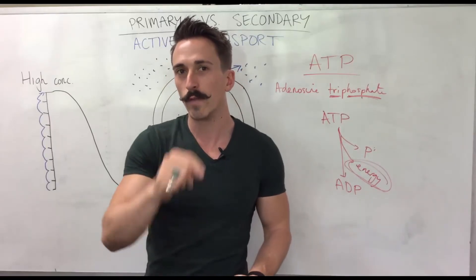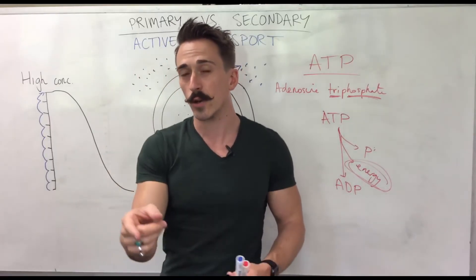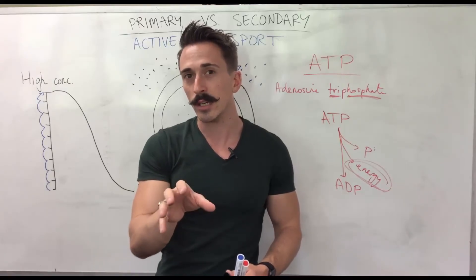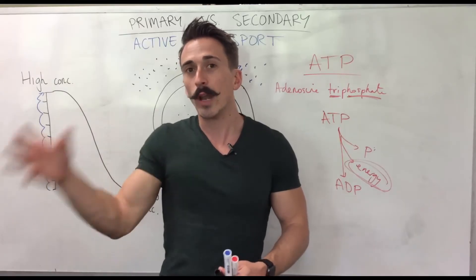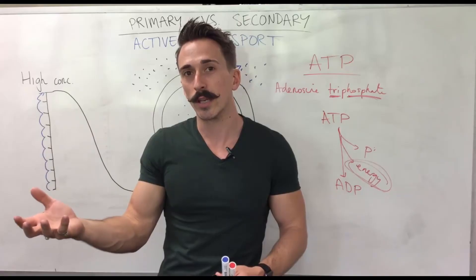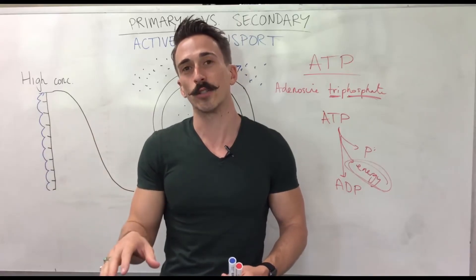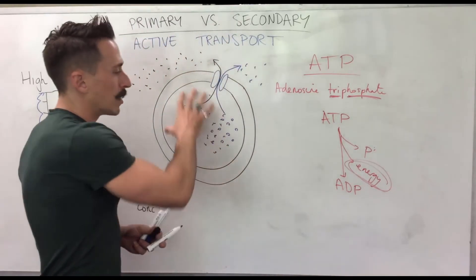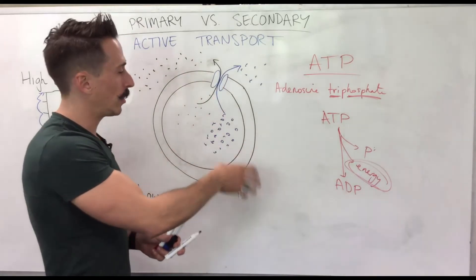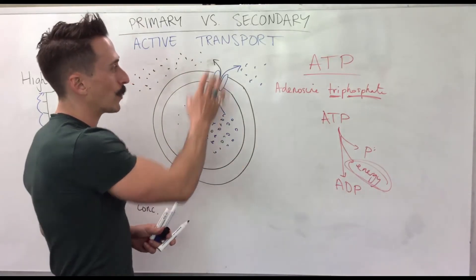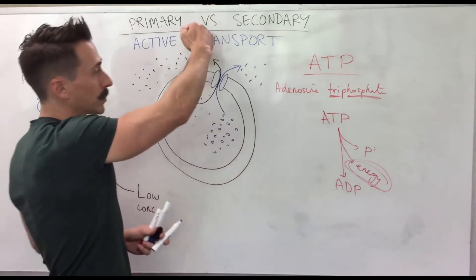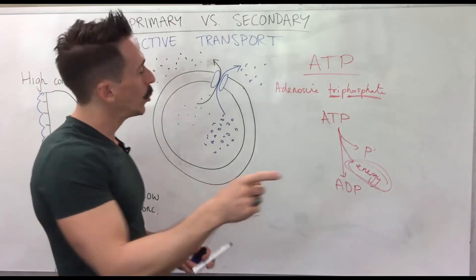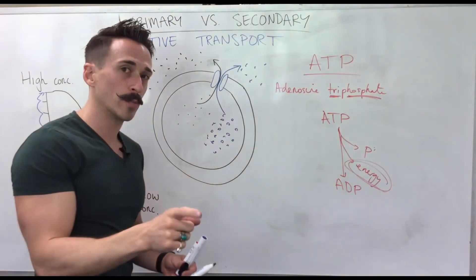Secondary active transport is where a solute moves against its concentration gradient using the energy stored from another solute or substance going down its concentration gradient. The examples here show substances going out of the cell, but this can happen with substances wanting to go into the cell as well.